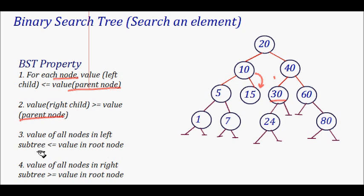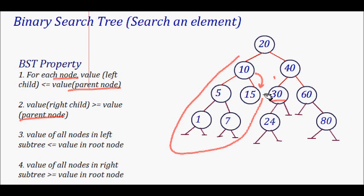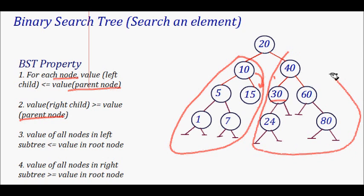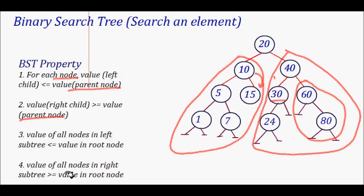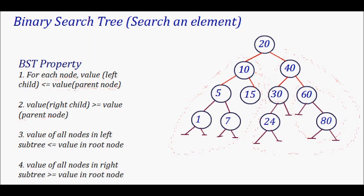The recursive property also says that the value of all nodes in the left subtree should be less than or equal to the value of the root of that subtree. For example, everything in the left subtree of 20 should be less than 20, and everything on the right subtree should be greater than 20. Similarly, if 40 is the root of a subtree, then 24 and 30 on the left should be less than or equal to 40, and everything on the right should be greater than or equal to 40.